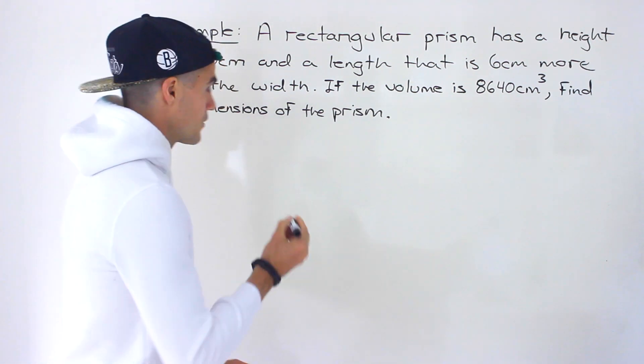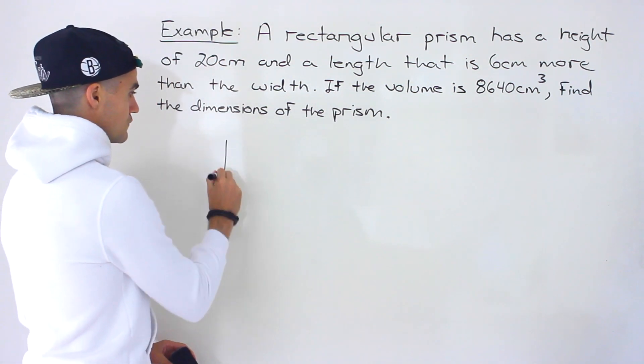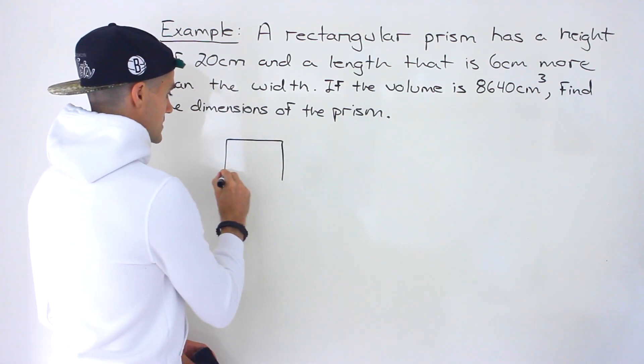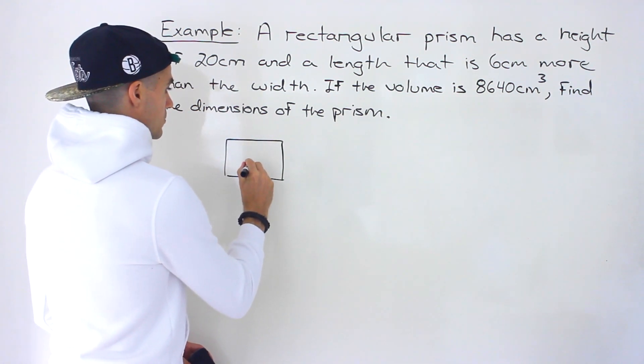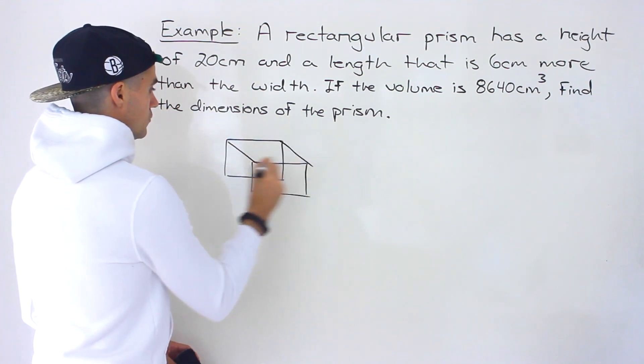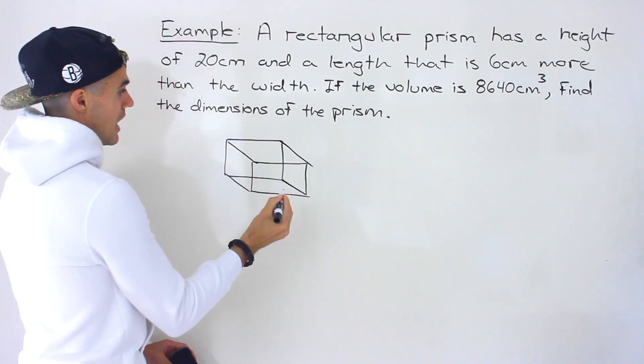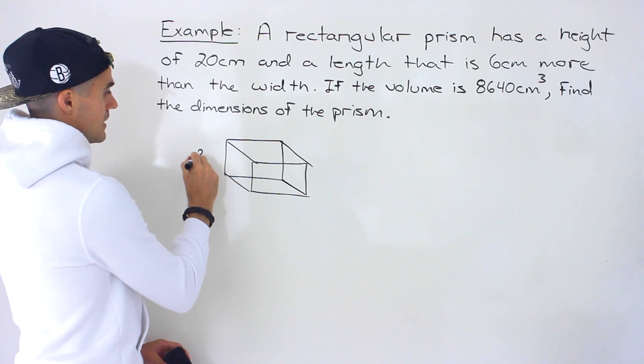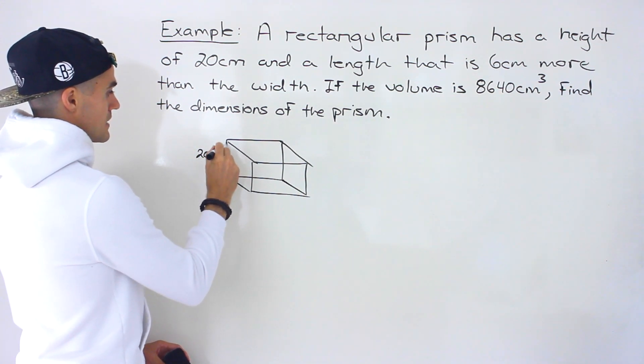Let's start off with a diagram just so we can visually see what is happening. If we have a rectangular prism like this, we're told that the height of the prism is 20 centimeters. So that's this right here.